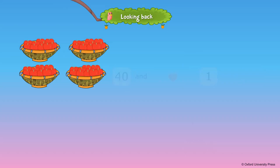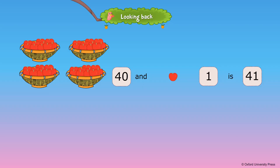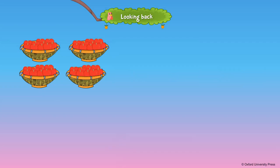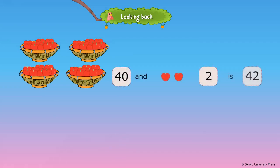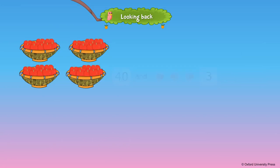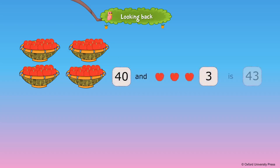Each basket has 10 apples. There are 40 apples in all the baskets together. If one more apple is added, we will have 41 apples. 40 and 1 is 41. If two more apples are added, we will have 42 apples. 40 and 2 is 42. If three more apples are added, we will have 43 apples. 40 and 3 is 43.